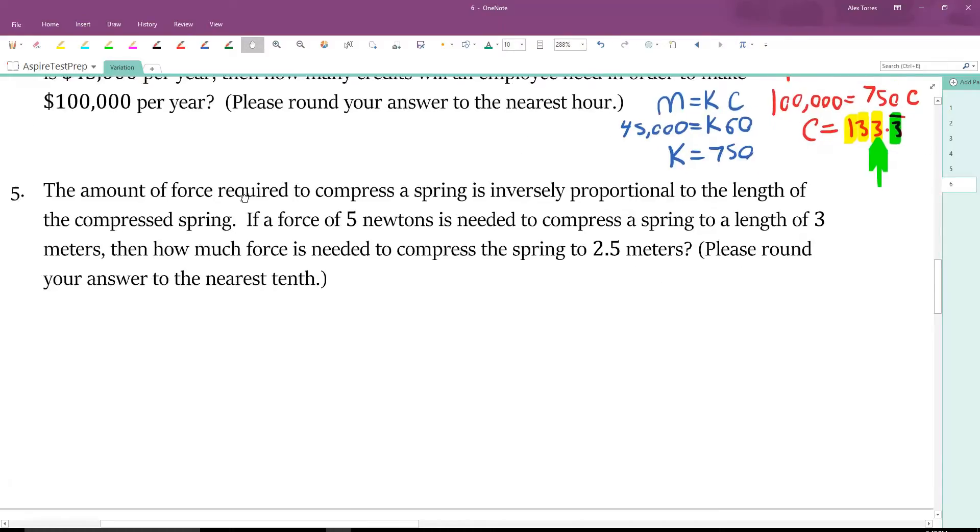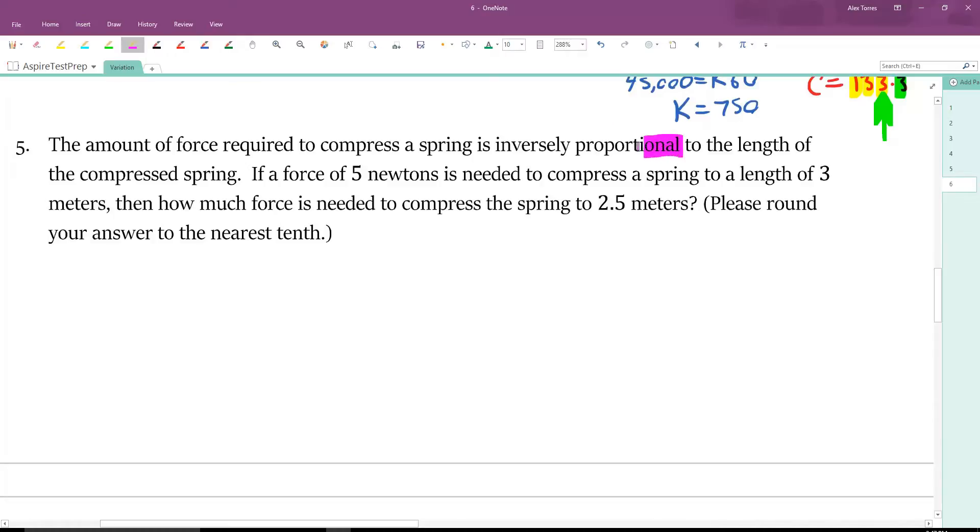Going over to number 5 now. We have inverse proportionality. Inverse just means that instead of multiplying by K, we're going to take K and divide it by our number. The force is inversely proportional to the length. A force of 5 is needed to compress a spring to a length of 3. Multiplying both sides by 3, we have K equals 15. That's enough information for us to rewrite the equation. F equals 15 over L. How much force is needed to compress the spring to 2.5 meters? F equals 15 over 2.5. All we did is plug in 2.5 for the L.